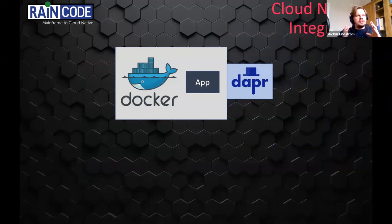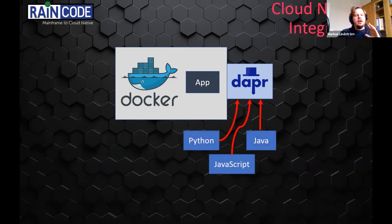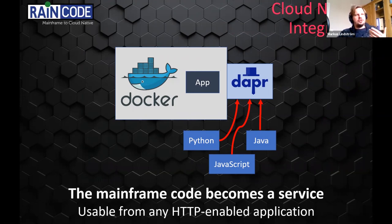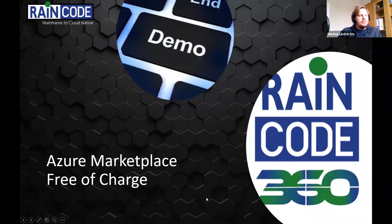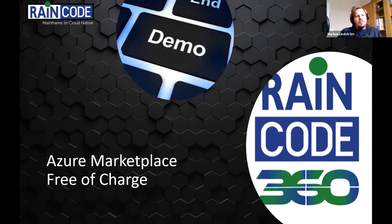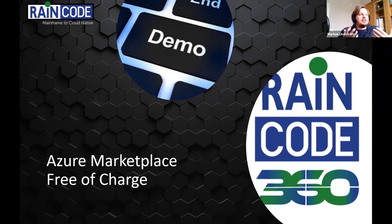This approach puts business logic into microservices, opening a world of consumption by modern languages — Python, JavaScript, Java — basically any language that supports HTTP clients. I'm going to do a demo showing the whole scenario: going from a 3270 screen-based application to an HTTP-based front-end. I'll show this in an environment called RainCode 360, which is available free of charge on Azure Marketplace. Anyone with an Azure account can use it. RainCode 360 contains all of these demos, so everything I'm going to show can be tried for yourself on Azure.